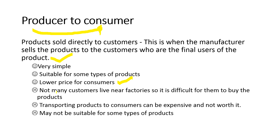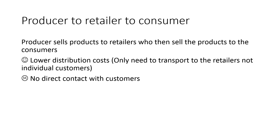Not all producers are online, not all producers offer the option for consumers to buy directly, transporting products to consumers can be expensive and not worth it, and it may not be suitable for some types of products — for example vegetables or products that expire quickly.